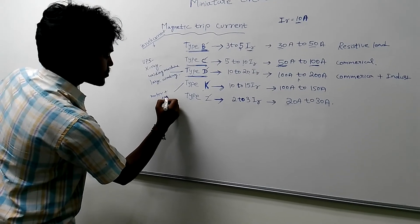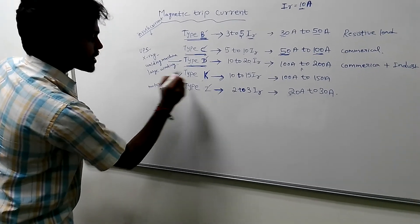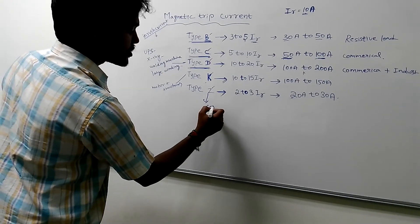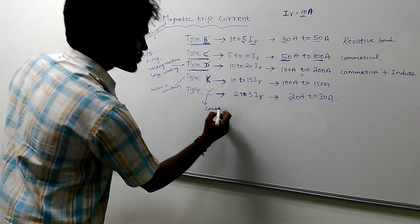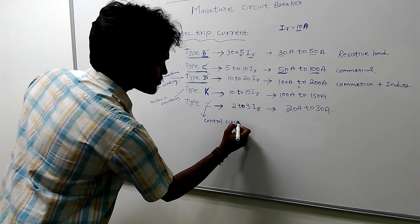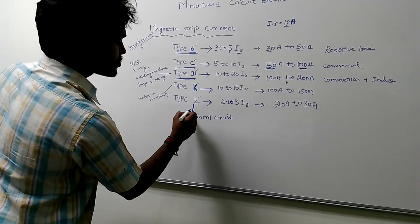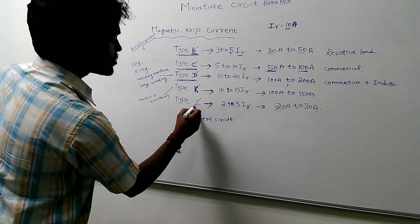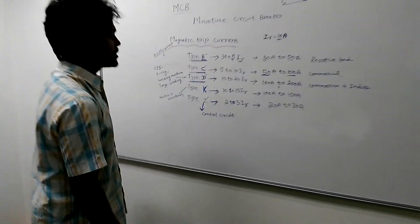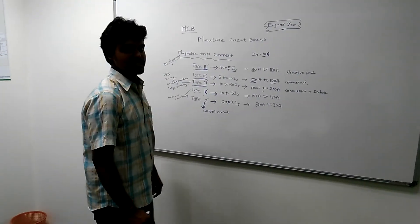Type Z is used for control circuits. That covers the main MCB types — Type B, C, D, K, and Z.